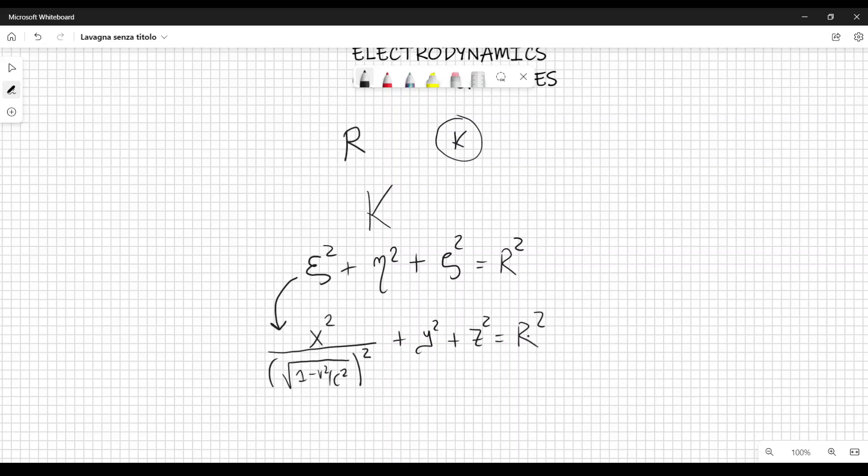Now, a rigid body which is measured in a state of rest has the form of a sphere in the system lowercase k, but, as you can see, it has the shape of an ellipsoid of revolution. And the axes of the ellipsoid of revolution are R√(1 - v²/c²), R, and R. So, you simply divide by R² and you will get that ellipsoid with these axes.